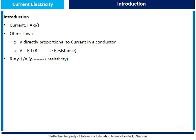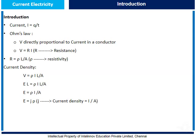Now let us understand current density. Current density is the total current flowing per unit area. We know V equal to RI, which can also be written as V equal to rho times I times L divided by A. Since V equals E times L (electric field into length), we get E equal to rho into I by A. I by A can be written as J, the current density. So J equals E by rho, or J equals sigma E, where sigma is conductivity equal to 1 by rho.